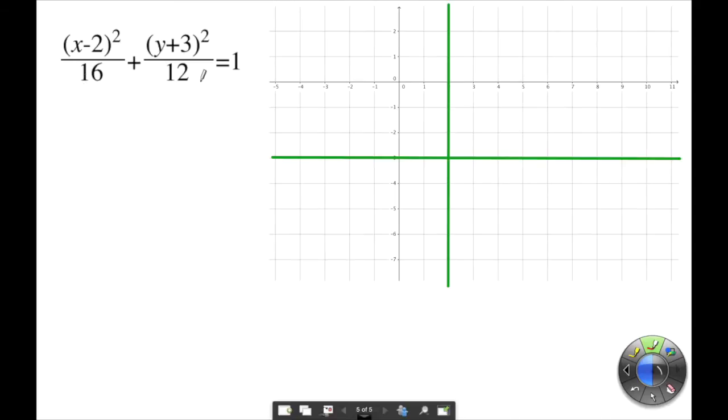So to determine which one is a you always go for the bigger one. So the bigger one over here is the 16. So this a squared is going to equal 16 and therefore a is going to be literally plus or minus 4. But I'm just going to write it down as 4. And then the same thing for the b. The b squared is going to equal 12, the smaller number. Therefore b is going to equal the square root of 12, better known as 2 square roots of 3.